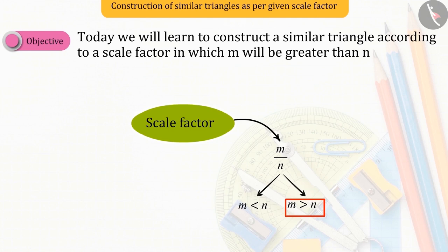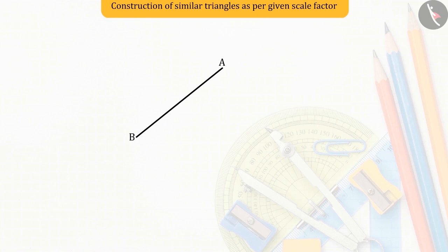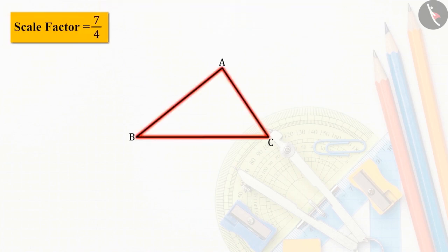Let us try to understand this with the help of an example. Suppose to a given triangle ABC, a similar triangle is to be constructed whose sides are 7 upon 4 of the given triangle. That is, scale factor is 7 over 4.